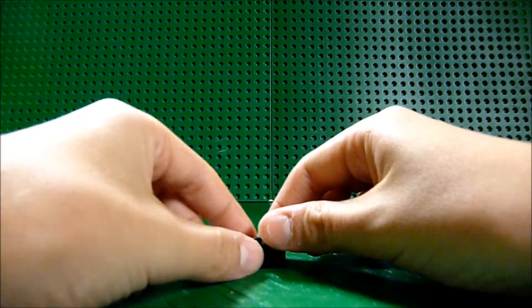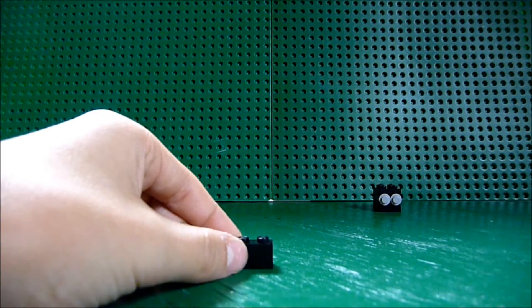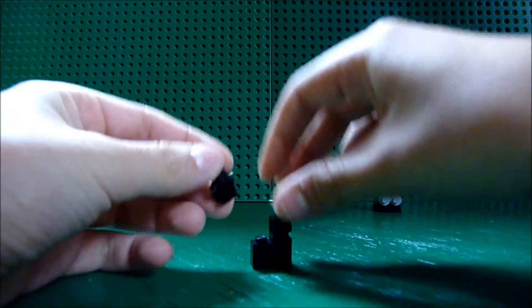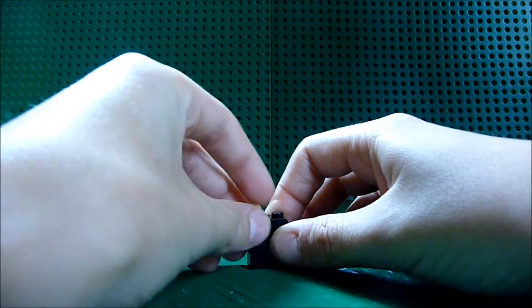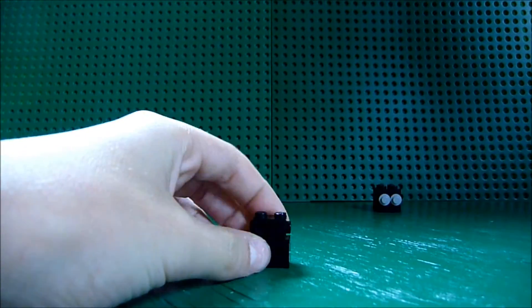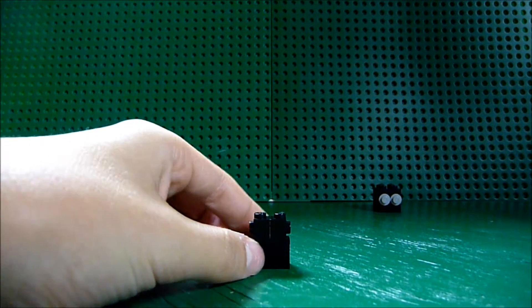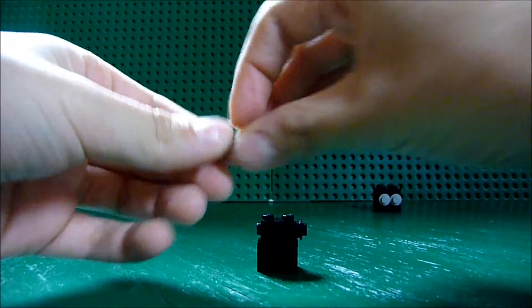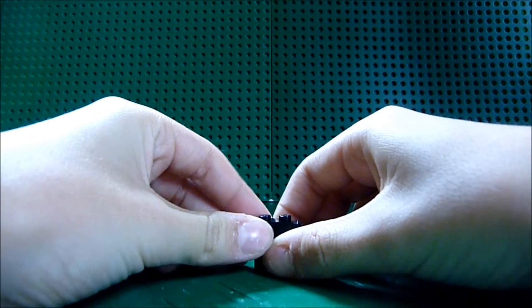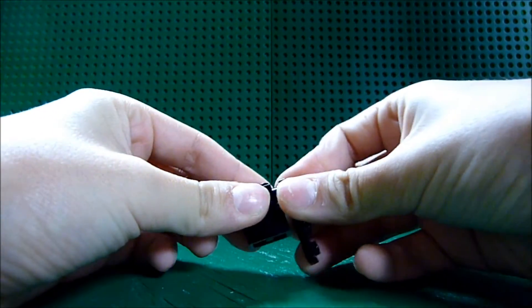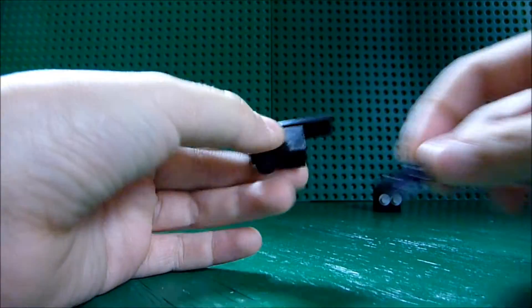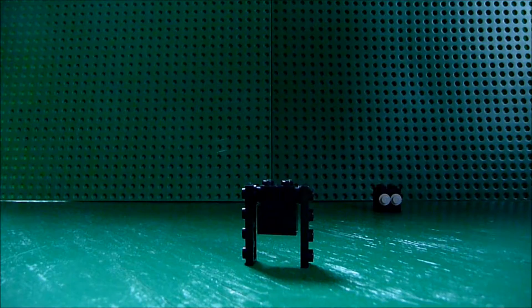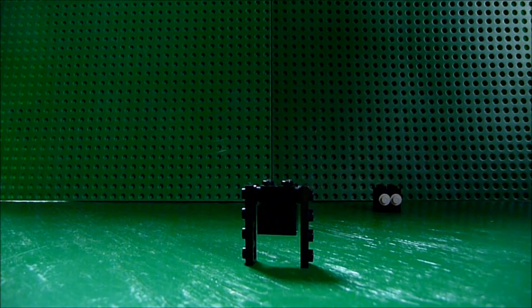And then we'll get a one by two brick, and then put two one by one headlight pieces, and then put two on the side right here, one by one flat plates, and then put the arms on by putting two one by four plates.